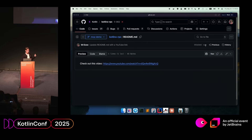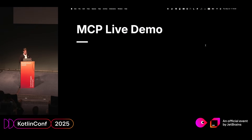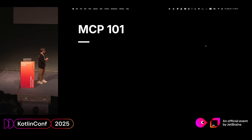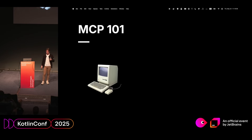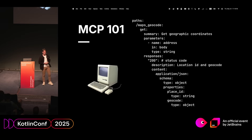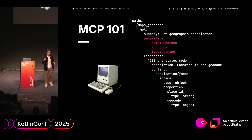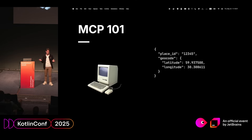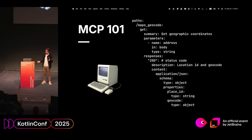That is much more impressive — we can make AI agents do complex stuff for us. Let's go back to theory. How does MCP work internally? You have a server — a regular server that calls the Google Maps API. An API endpoint might look like this: we have an endpoint for geocode, we give it an address and it returns coordinates, described as JSON. This is the OpenAPI specification for this.